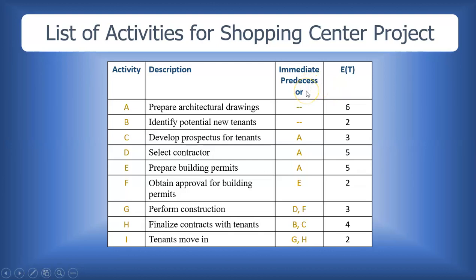In the third column we have our immediate predecessors, and immediate predecessors are activities that must be completed before we can begin an activity, or immediately before we begin an activity. You will know that activities A and B have no immediate predecessors. That means as soon as we are ready to start this project, both activities A and B can commence right at the beginning of the project.